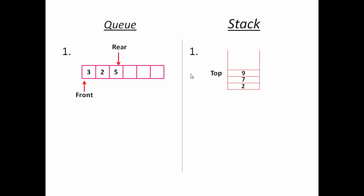To perform queue operations, we need two pointers: one is rear and the other is front. But in case of stack, we need only one pointer, that is top of the stack.